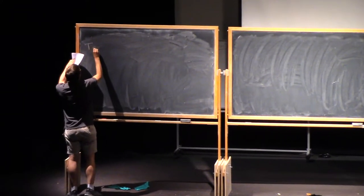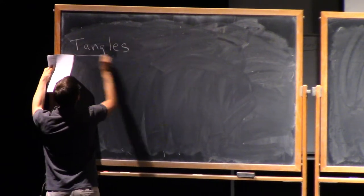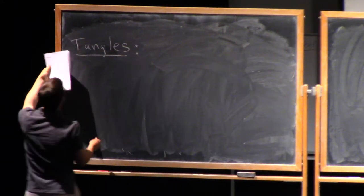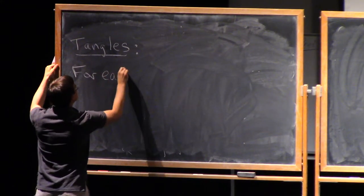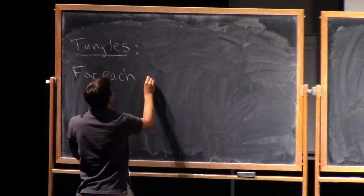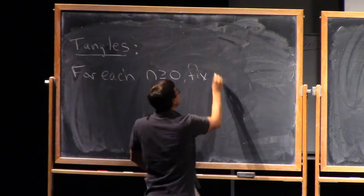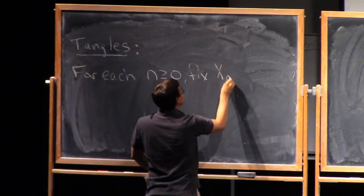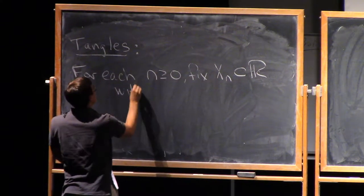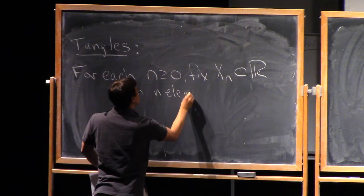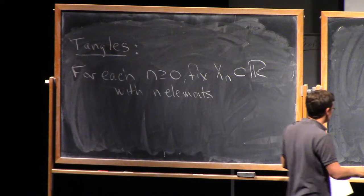So maybe let's just start with some definitions. We'll talk about tangles. For each positive integer, let's fix some set x_n, which is a subset of R with n elements. You could think of it as the first n integer points or something, but it doesn't matter much.